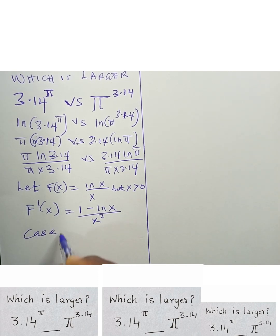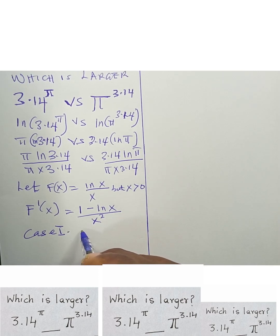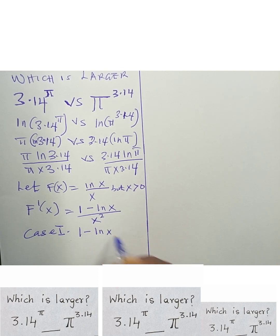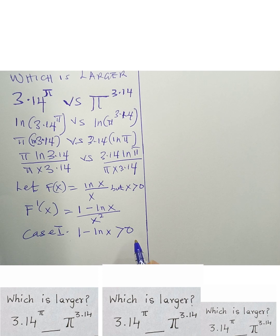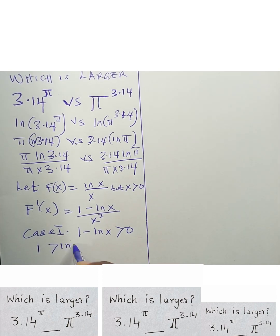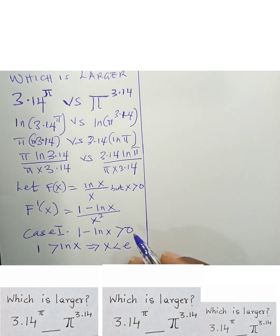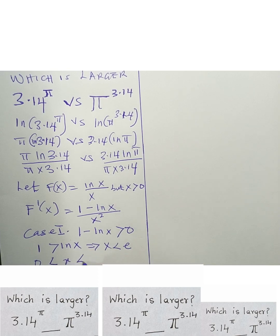Now let's look at Case 1: when the numerator is greater than zero. If 1 − ln(x) > 0, this implies 1 > ln(x), which means x < e. So for Case 1, we have 0 < x < e, and the function is increasing.